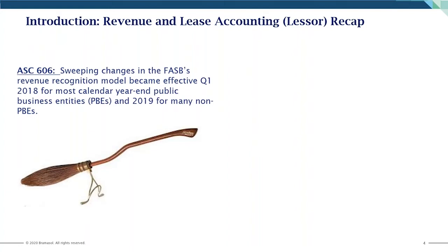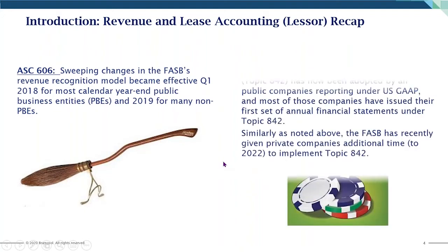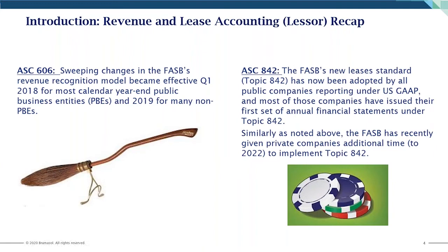With the adoption of the new revenue accounting standards — ASC 606 and IFRS 15 — most companies had quite a significant impact from the changes, namely the adoption of a universal set of rules for revenue accounting following a five-step model. A couple years later, we had the most significant change in the leasing industry in over 30 years.